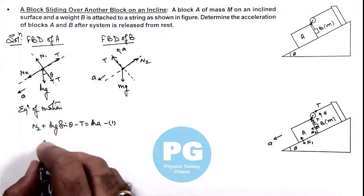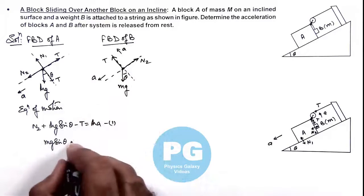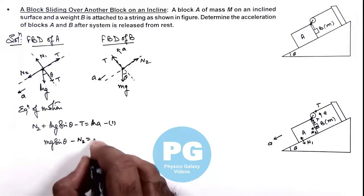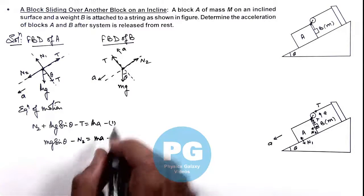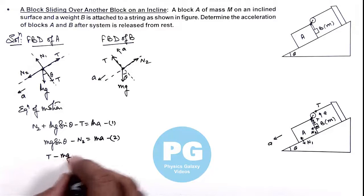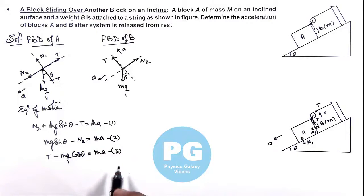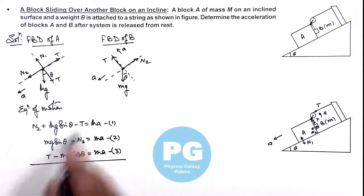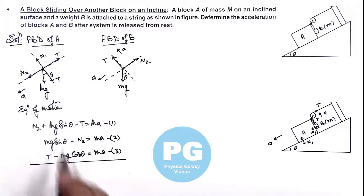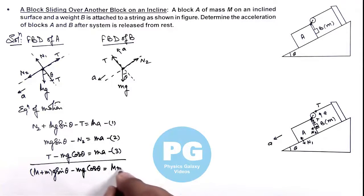Along the incline for block B: small mg sine theta minus N2 equals small m·ay — this is the second equation. Normal to the incline: T minus small mg cosine theta equals small m·ay — this is the third equation. Adding these equations, T and N2 cancel out, giving: (M + m)g sine theta minus mg cosine theta equals (M + 2m)·ay.